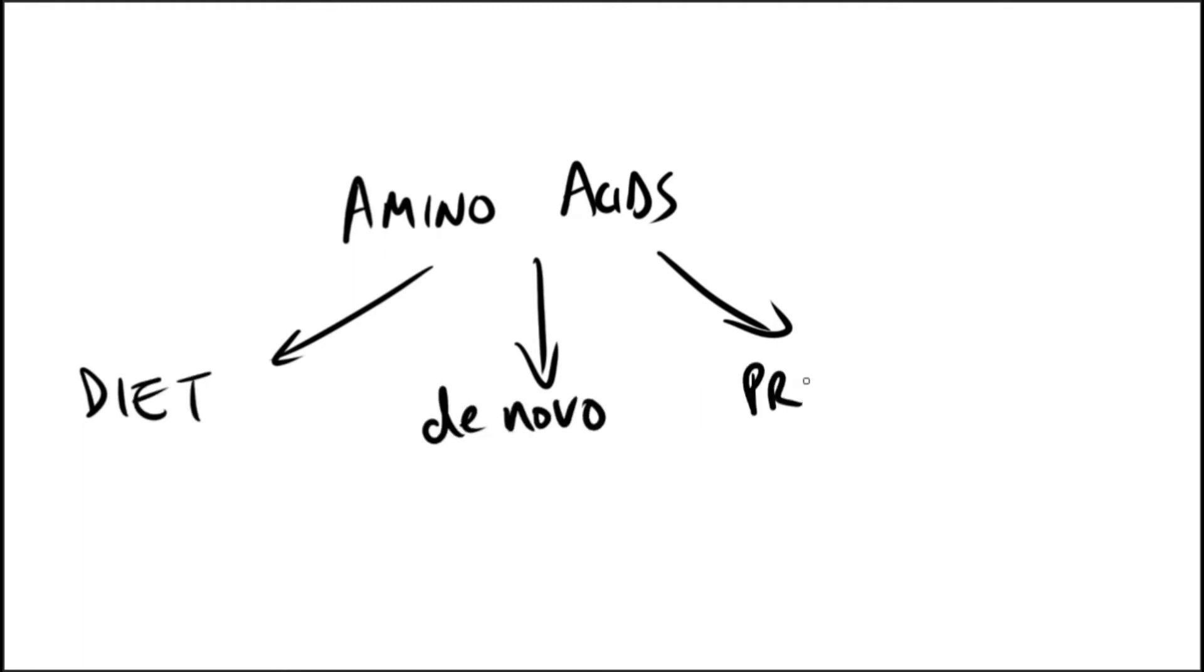Starting with digestion, it begins in the stomach which secretes gastric juice. This juice contains HCl and the proenzyme pepsinogen. It makes the pH optimal for the action of proteases. Pepsinogen is a zymogen, and once it is activated it becomes pepsin.